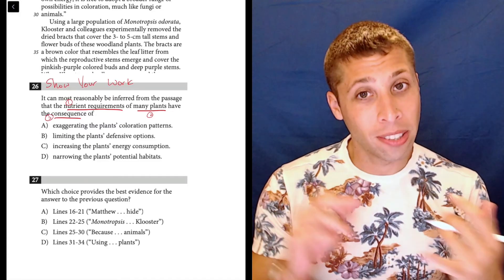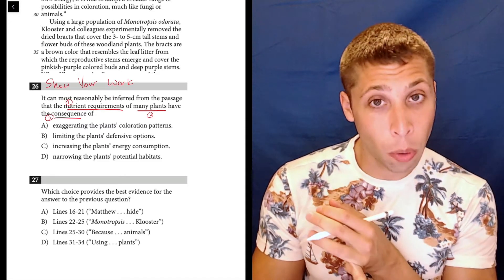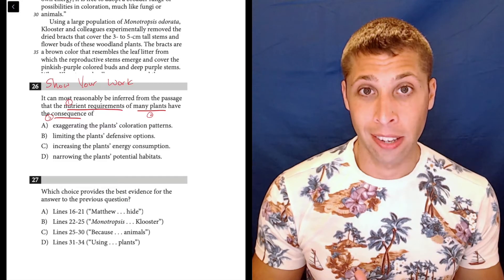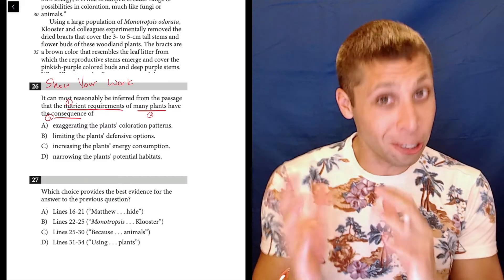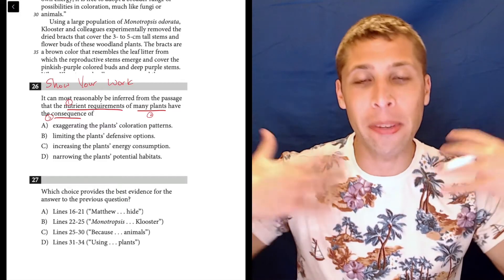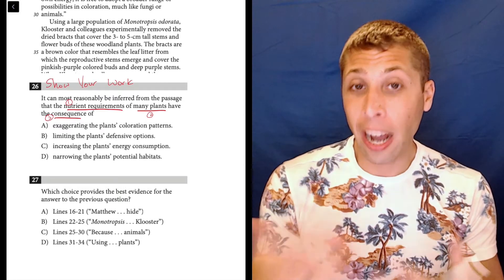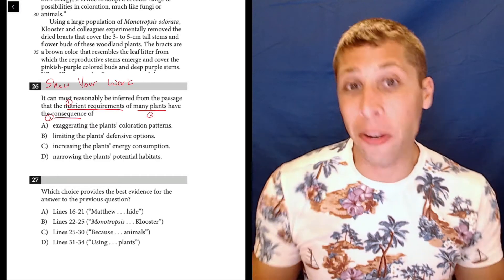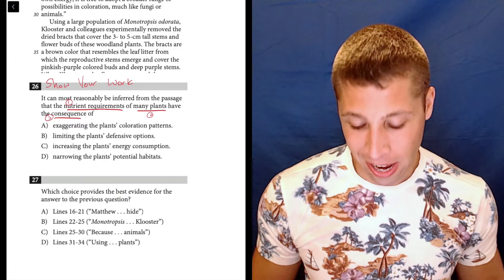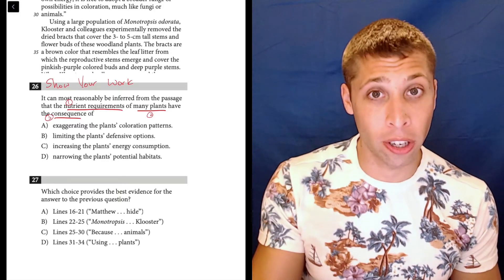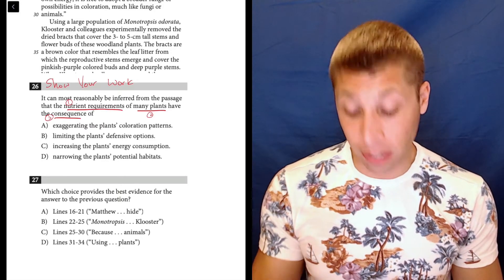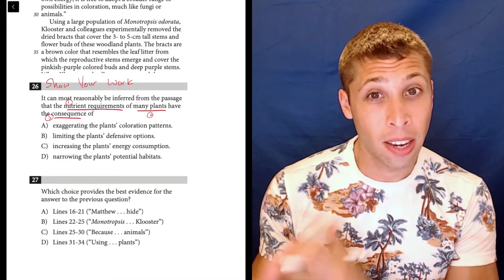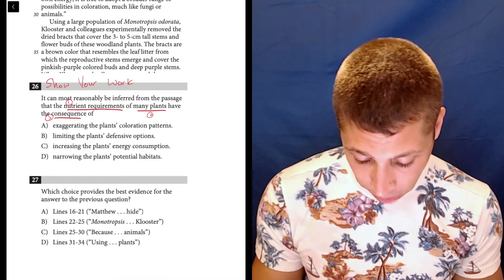When I'm going through these lines, I want to see that they're talking about nutrient requirements, I want to see what the consequence of those requirements are, and I'd love to hear something about other plants. So that's a long list for one question, but it's at least giving me something to focus on. We want to know what we're looking for here. So we're going to follow the QLC method. We've read the question. Now we're supposed to go to the line references, and the line references are in question 27.